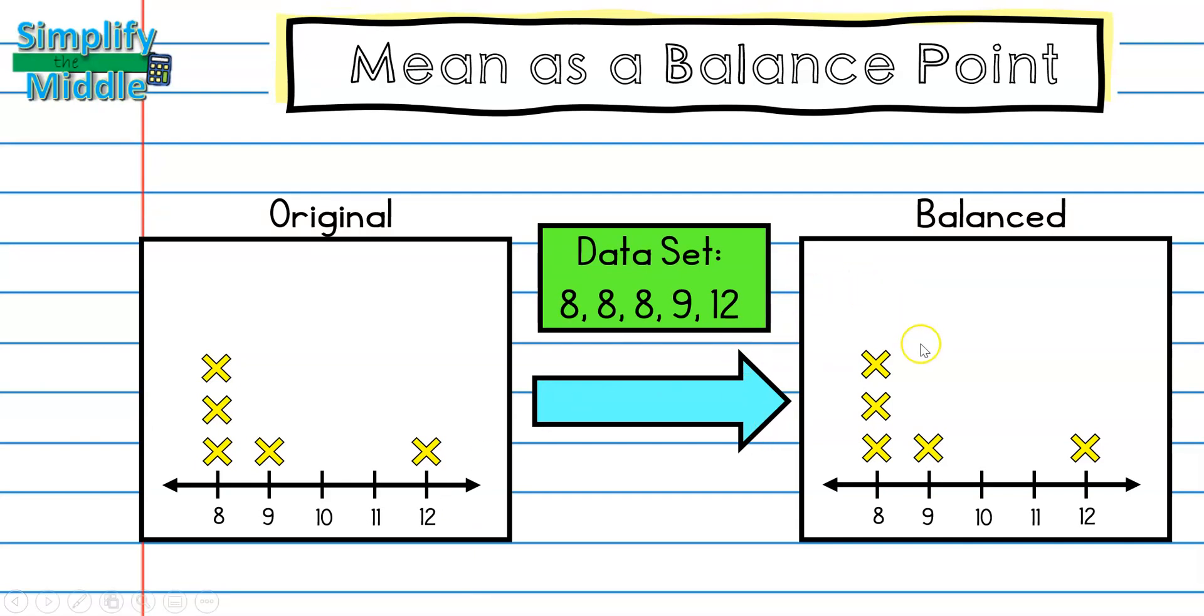After we've created our line plot, the next most important step is to make sure that we are looking at the outermost point of our data. So here on the left that's 8, and here on the right that's 12. I'm going to be moving each of my outermost points towards the center, one space at a time.